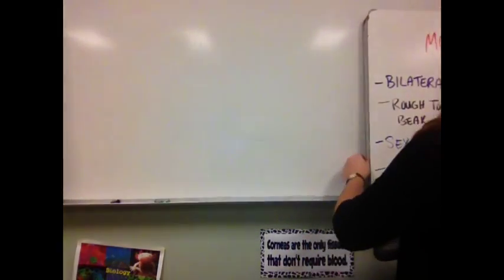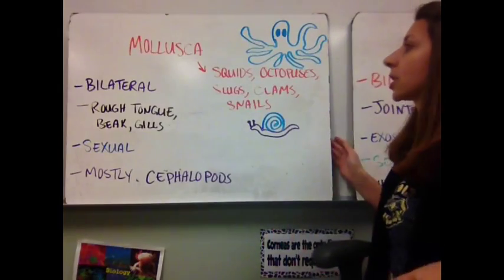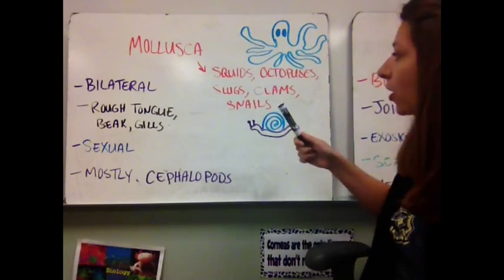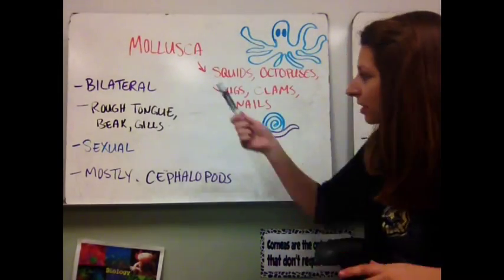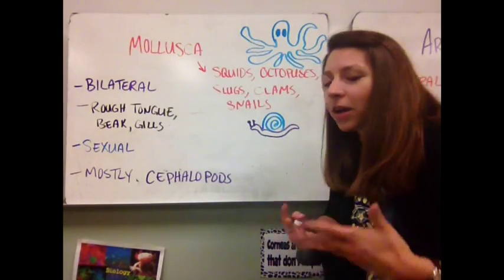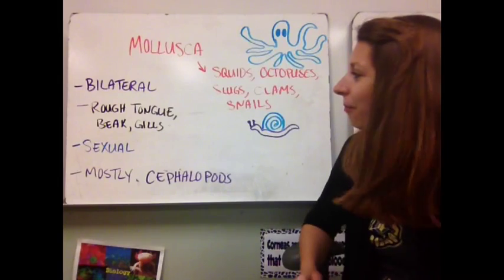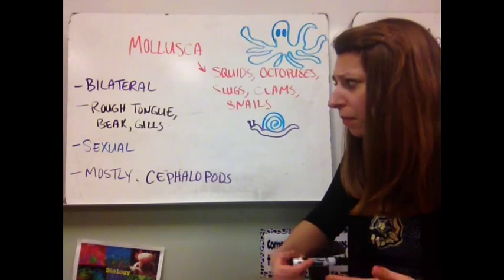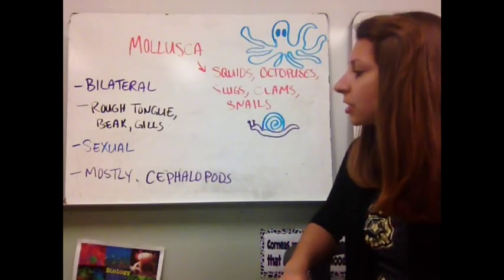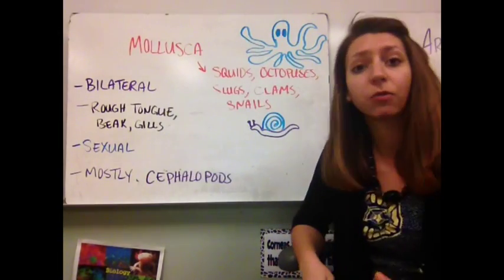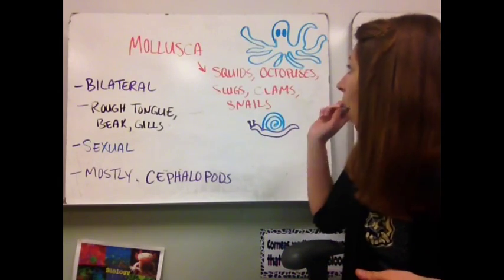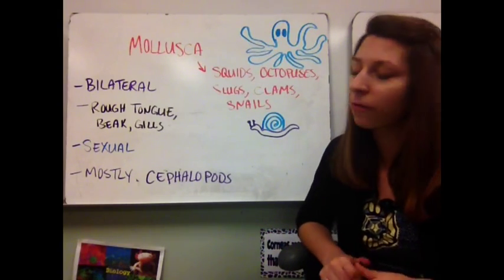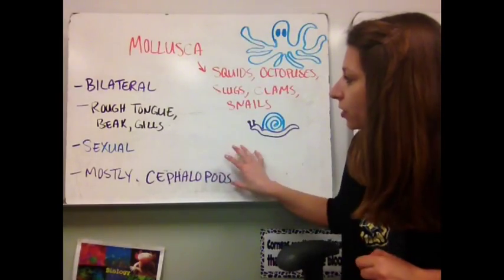Moving on to our Mollusca. These include squid, octopuses, slugs, clams, and snails. These guys also have bilateral symmetry. They've evolved various ways to eat — they have a specialized rough tongue, some have beaks, and some have gills that they can use. They also do respiration through their gills, and they have sexual reproduction. Most of these guys are going to be cephalopods, which include octopuses, squids, and cuttlefish — and they're really good at camouflaging.